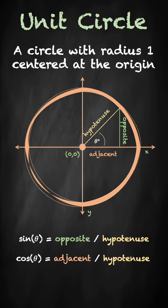Sine of an angle is equal to the length of the opposite edge divided by the hypotenuse, and the cosine is the adjacent edge divided by the hypotenuse.